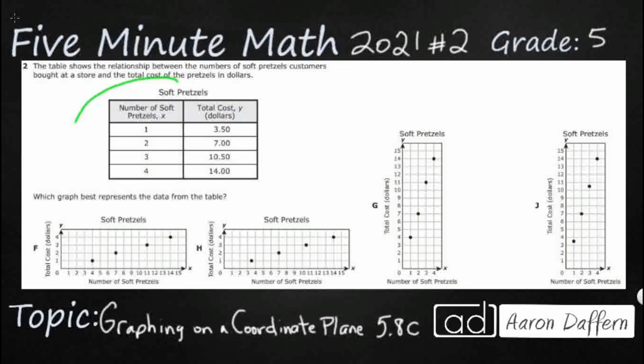So we have a table here showing the relationship between the number of soft pretzels, and that's going to be our x coordinate, and the total cost that each customer spent on these pretzels. So one pretzel cost $3.50, and our cost is going to be our y coordinate. So just look at this as an x, y input-output table.